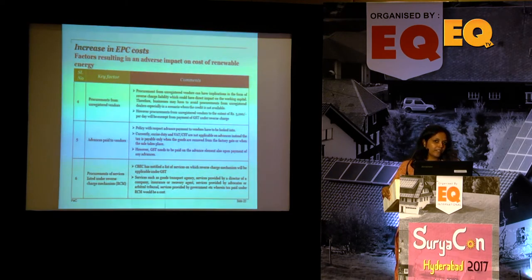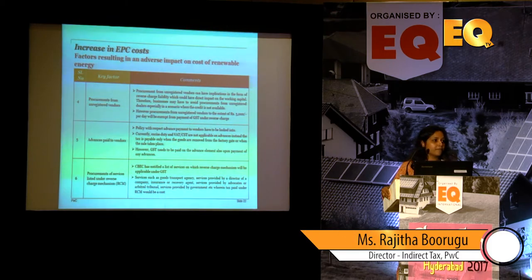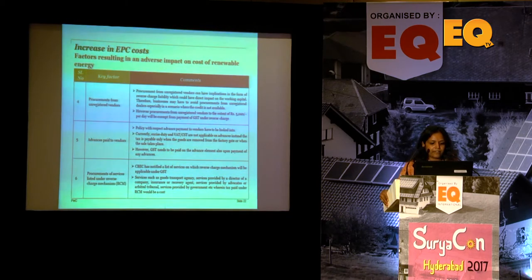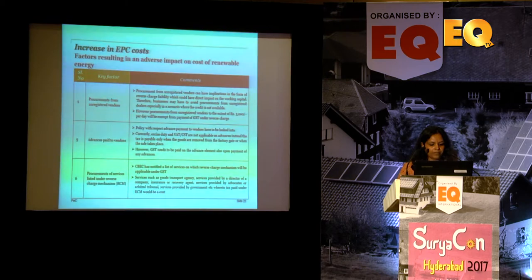There are compliance burdens as well. If only into electricity generation, you cannot take credit — that is one financial impact. Additionally, when procuring from unregistered dealers, you must pay tax under reverse charge, which will not be available as credit. On advances, you must pay GST — this is an additional working capital cost. For services, there is a list of transactions subject to reverse charge — for example, payments to independent directors, advocates, or goods transport agencies.